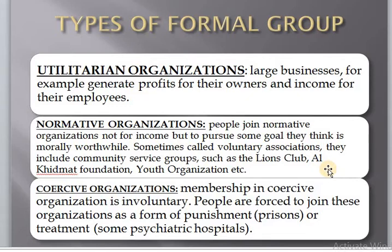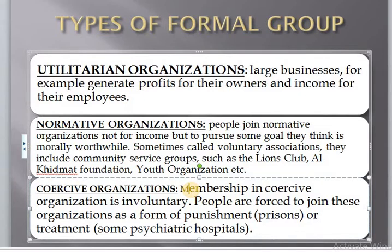Normative organizations are sometimes called voluntary associations. They include community service groups such as the Lion Club, Al-Khidmat Foundation, and youth organizations — organizations that are working in the community. Coercive organizations have involuntary membership; people are forced to join these organizations as a form of punishment, like prisons, or for treatment, such as some psychological hospitals.